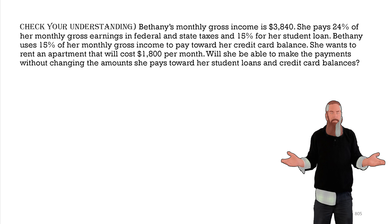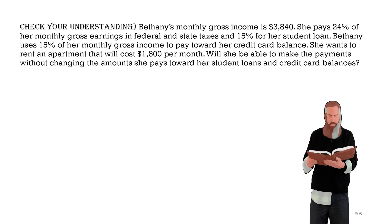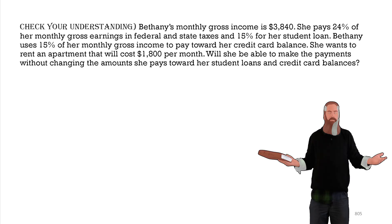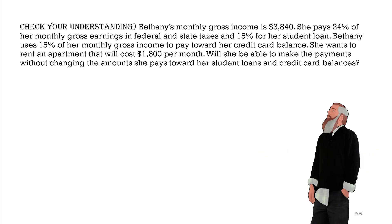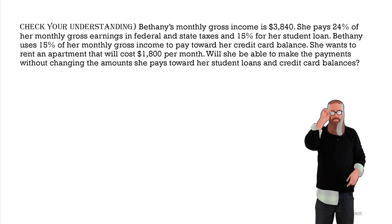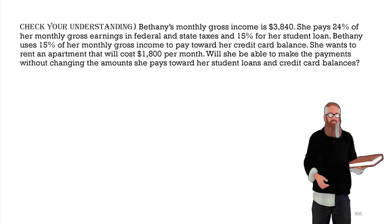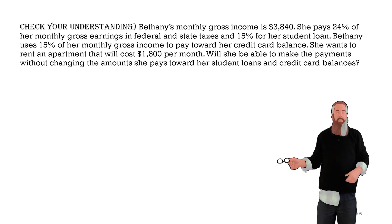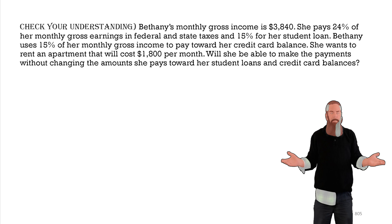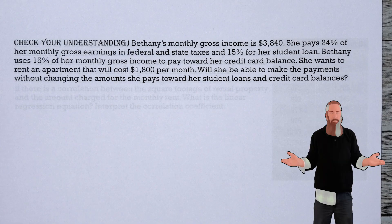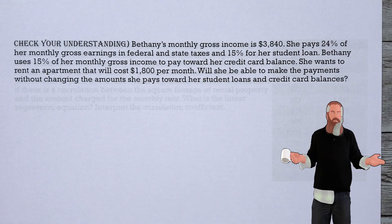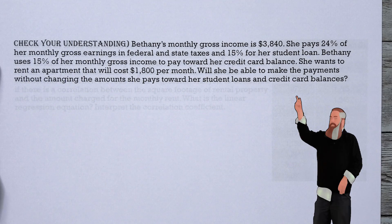Let's check our understanding. Bethany's monthly gross income is $3,840. She pays 24% in federal and state taxes, 15% for student loans, and 15% toward her credit card balance. She wants to rent an apartment for $1,800 per month. After subtracting 24%, 15%, and 15%, she has 46% left: $3,840 × 0.46 = $1,766.40, which is short of $1,800. She will need to find a less expensive apartment.